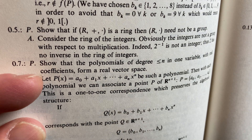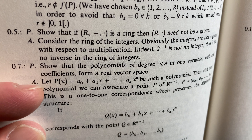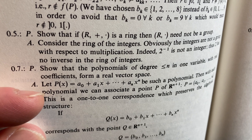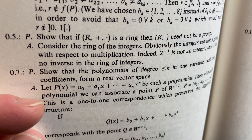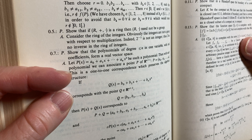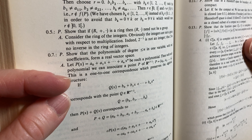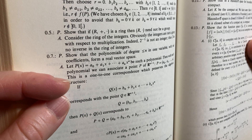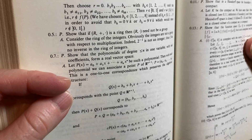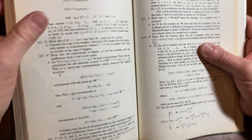That's true — two to the negative one is not an integer; one half is not an integer. Thus two has no inverse in the ring of integers. So it can't be a group because that violates one of the conditions of being a group.